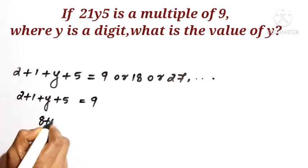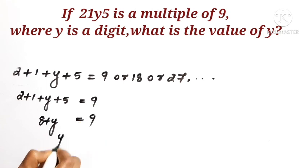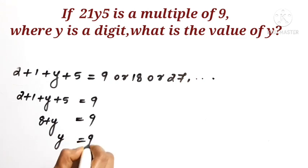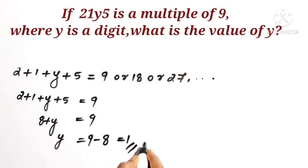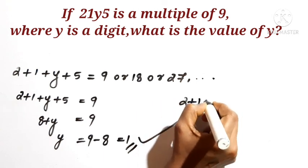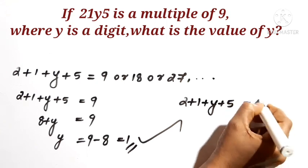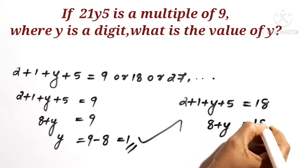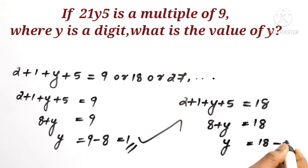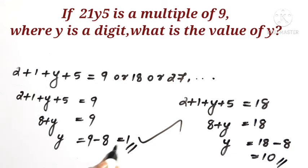From the digit sum: 8 plus Y equals 9, so Y equals 9 minus 8, which gives Y equals 1. That is valid since Y is a single digit. Checking the next multiple: 8 plus Y equals 18, so Y equals 18 minus 8 equals 10. But 10 is a 2-digit number, and Y must be a single digit. So the correct answer is Y equals 1. Thank you.